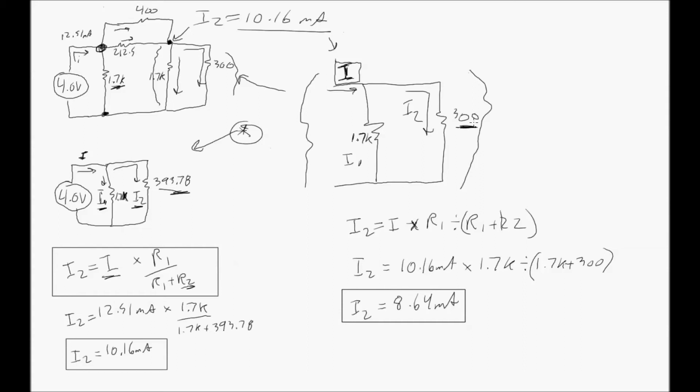And in order to do that, we first needed to do a delta-Y transformation to get a circuit which we could get easy equivalent resistances from. Then use the current divider rule twice to get the current flowing through the 300 ohm resistor. It's also possible to solve using the mesh analysis method, which I'll do now.